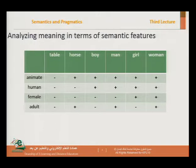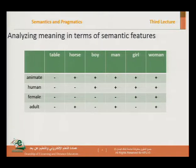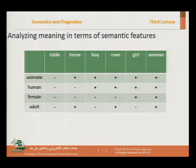How about horse? A horse is actually an animate creature, so it's plus animate. Can we describe a horse as human? No — minus human. Is a horse male or female? The horse referred to here is minus female. Is it adult? Yes, we're speaking about an adult horse. So a horse is plus animate, minus human, minus female, plus adult.